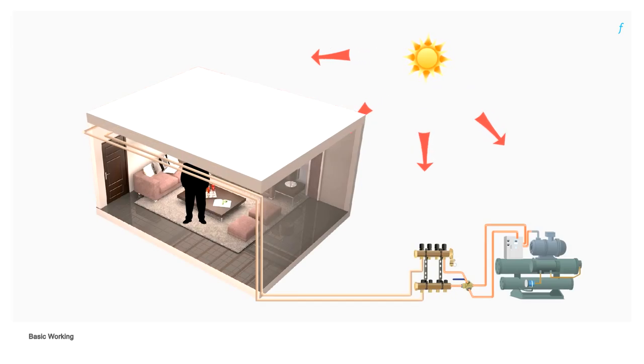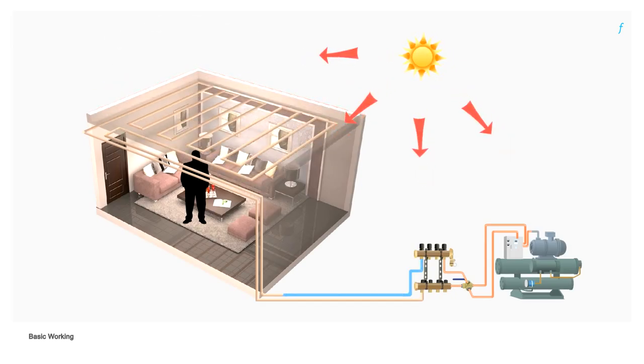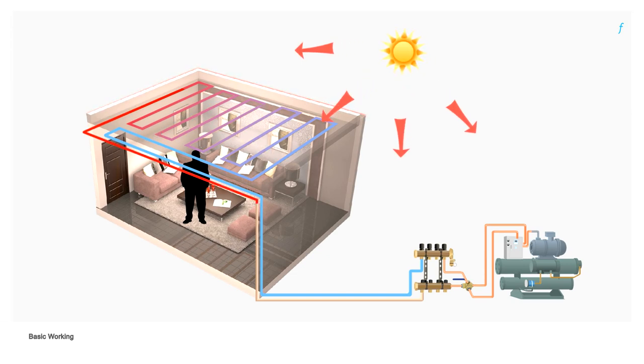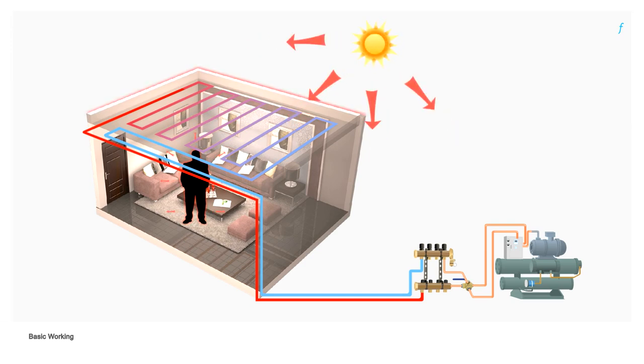Chilled water from the chiller goes to the manifolds and is distributed through the grid of pipes installed in the room. The chilled water in the pipes then absorbs heat from the ceiling or the floor, making it cooler than the objects and the occupants in the room. The resultant temperature difference ensures that heat from the bodies is now radiated towards the cooler building components, leading to a sensation of thermal comfort.